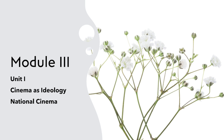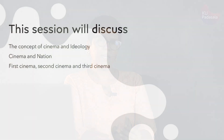Let's begin the first unit of the third module. This session will basically talk about cinema and ideology. We will try to understand what cinema is from the perspective of ideology. We will also look at the concept of national cinema — cinema as a product of national identity or as a product of the nation — and how cinema plays a significant role in nation building.